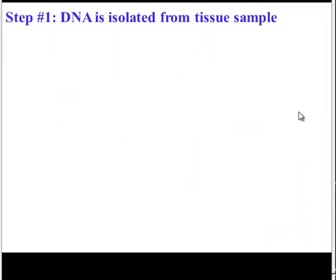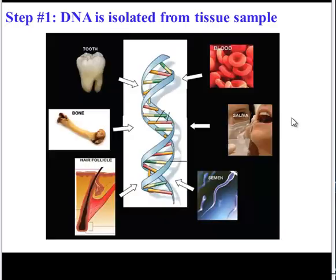The first step in any DNA profiling investigation is to isolate DNA from a tissue sample, and there are many different parts of the body where we could find DNA: teeth, blood, saliva, bones, hair, even semen.